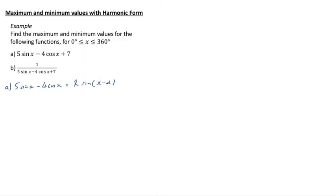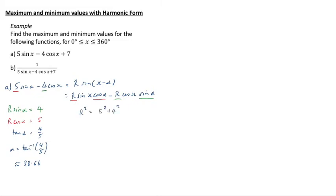The way we do this is obviously we're using harmonic form. It says so at the top and that's what this video is about. So 5 sin x minus 4 cos x is r sin x minus alpha. We expand that out, we do our r sin alpha is 4 and our r cos alpha is 5. We then do the tan of alpha is 4 fifths, that means alpha is tan to the minus 1 of 4 fifths, which is 38.66. r squared is 5 squared plus 4 squared, that's 41, so r is root 41.